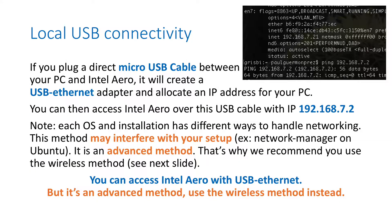Another way to get a terminal on Aero is to plug your computer directly with a micro USB cable from your computer to Intel Aero. An Ethernet-over-USB network will appear, and if you SSH to the IP 192.168.7.2 you will access the drone. The problem with this method is that each computer has very different network settings and firewalls, so it may not work on every computer.